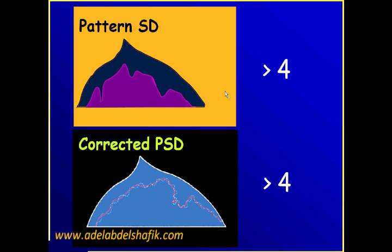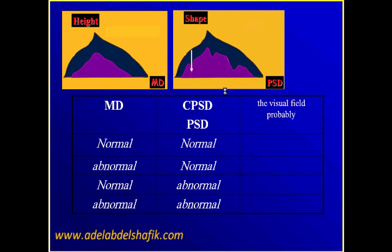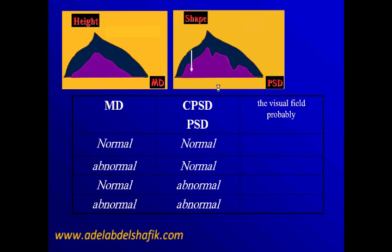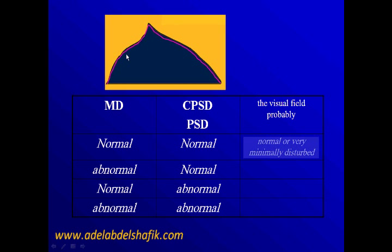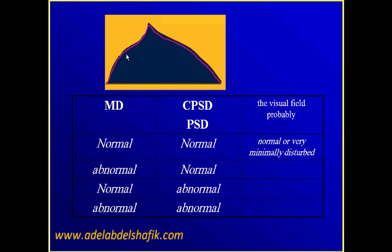Normally the pattern standard deviation should be less than four in the normal field. The mean deviation gives us an impression of the height and the pattern standard deviation gives us an impression of the shape of the field. In the first scenario, you get a normal mean deviation and a normal pattern standard deviation — then we are expecting to have a normal field. The shape of the field is regular and it is very high, like the normal values.